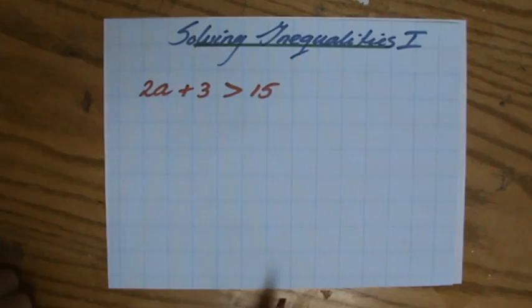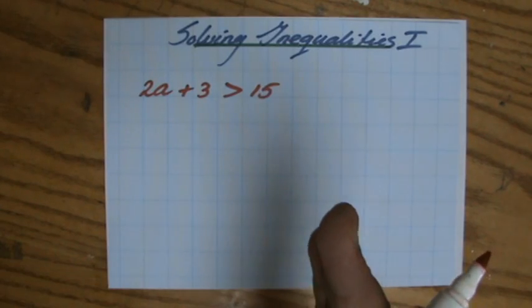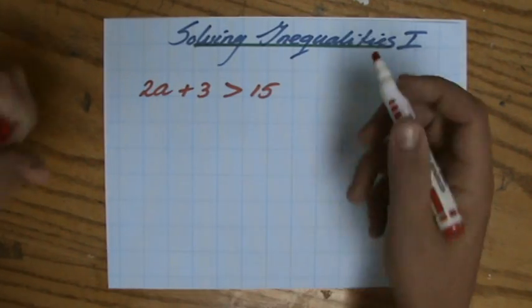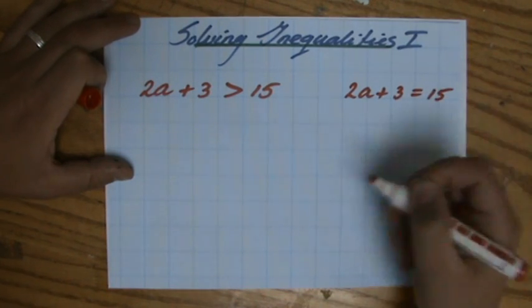But if we have the first inequality here, 2a plus 3 is larger than 15. Now this is not an equality, it's not an equation. But let's just, for the sake of it, say it is an equation. So equals 15.